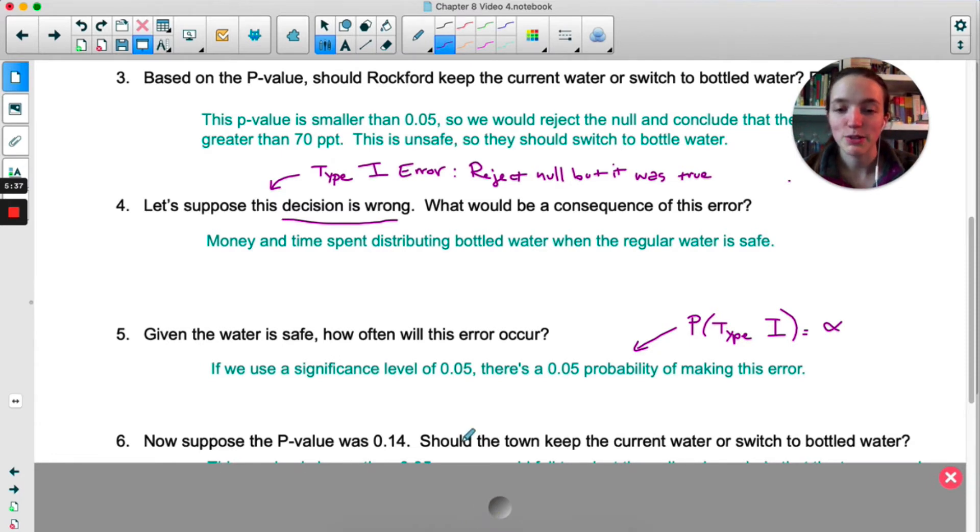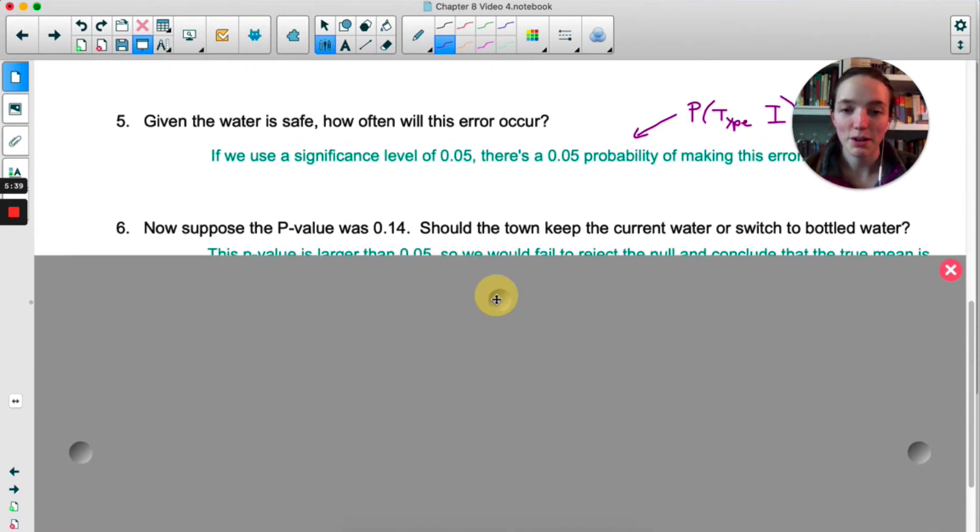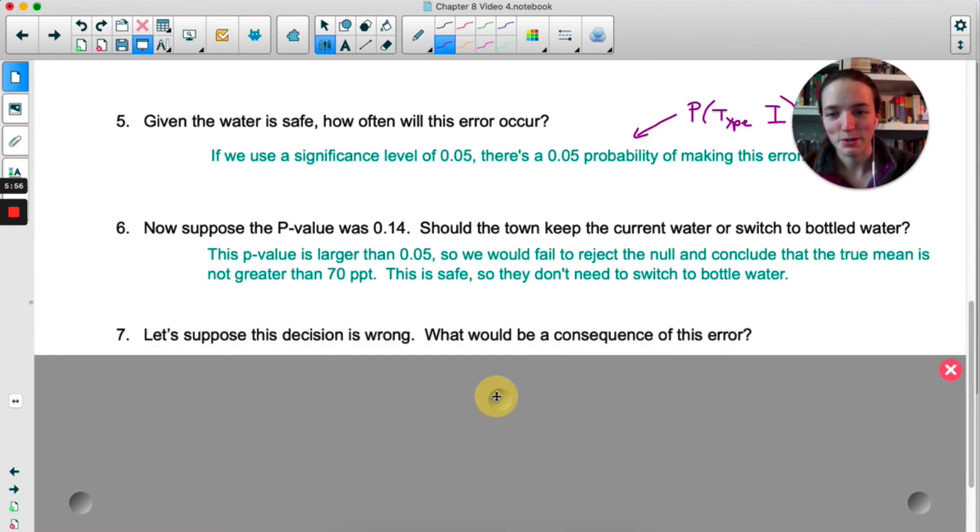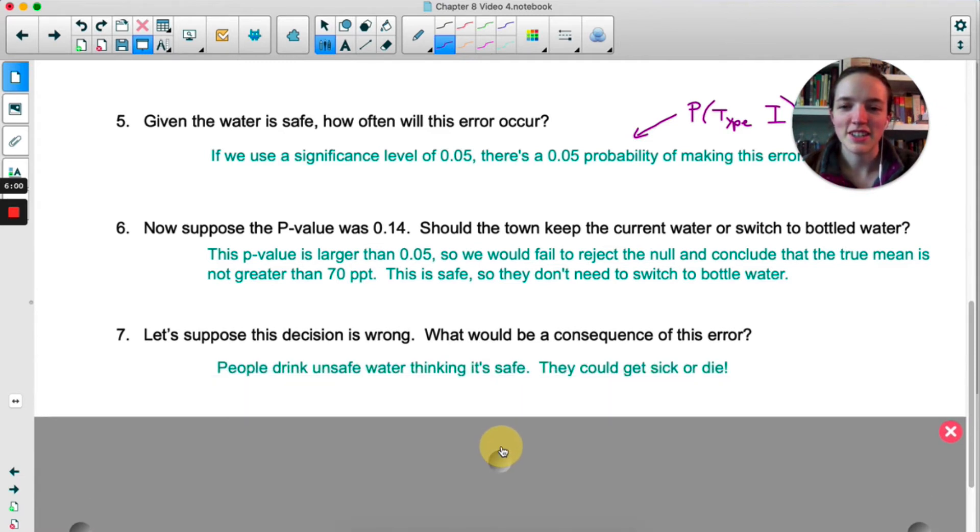Now we're going to suppose that the p-value is 0.14. If that were true, that p-value is much larger than our significance level, so we would fail to reject the null. And we would conclude that the true mean is not greater than 70. So we'd say yeah the water is safe, no need to use bottled water, it's totally fine to drink. You can see where this is going. If this decision is wrong, the consequence of this error is pretty serious. People might drink unsafe water thinking it's safe. That could lead to people getting sick or dying.